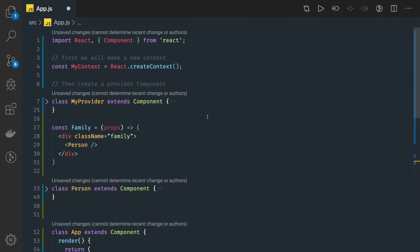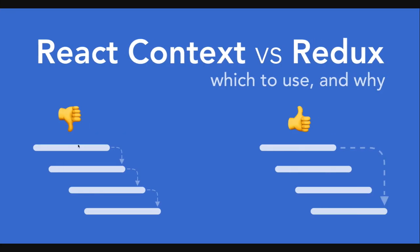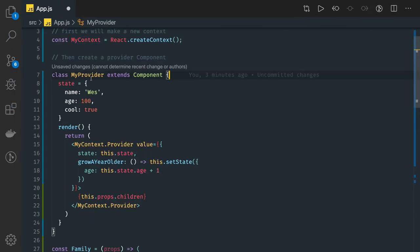Coming back to the code — let's try to understand how we create a context. First of all, using `React.createContext` we can create a context. This context will exist at the parent component. The problem statement we are trying to solve is: I have some data at the parent component, which is YouTube list data. If a child component needs that data, you would pass it as props, then it further passes to the child, then to the grandchild — a cascade effect. Props drilling is happening. We don't want it. If any child component wants the data, I want it directly, so I will be using context.